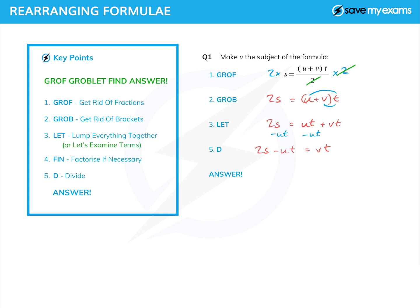We don't need to factorise — we only need to do that if there's more than one term with v in it, and there isn't in this case. So we go straight on to step five, which is divide. We divide both sides by the thing in the way of v being on its own, which is of course t. So we divide both sides by t, and we see what cancels on the right-hand side. Very obviously the t cancels — that was rather the point, to get v on its own. And that gives us the answer: v equals 2s minus ut over t.